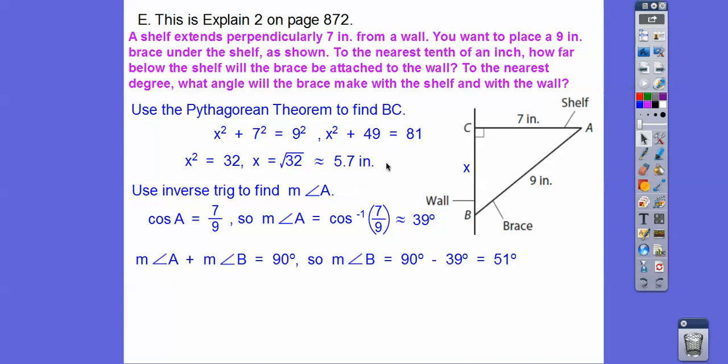So it said find this measure right here, which is about 5.7 inches. And this is about 51 degrees right there. Now we could have found this angle first and then did 180 to get angle A, but either way we would get the same answer.